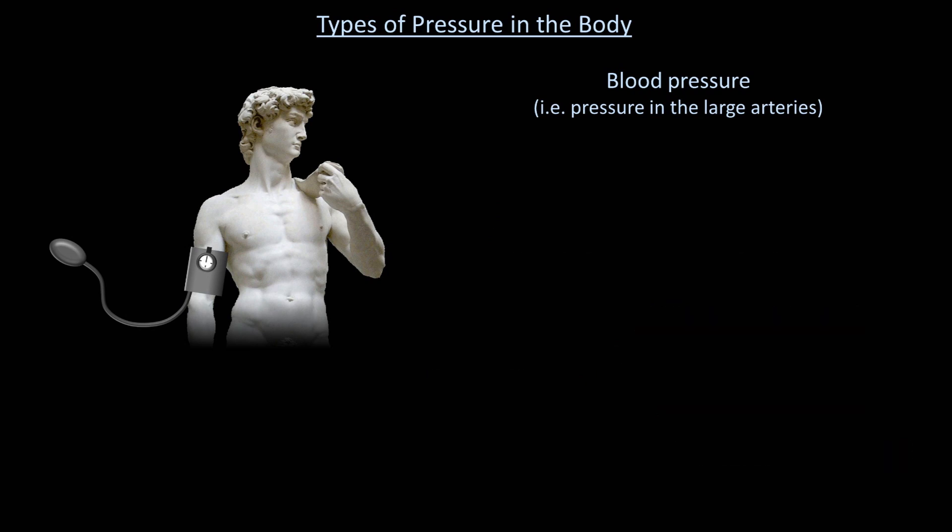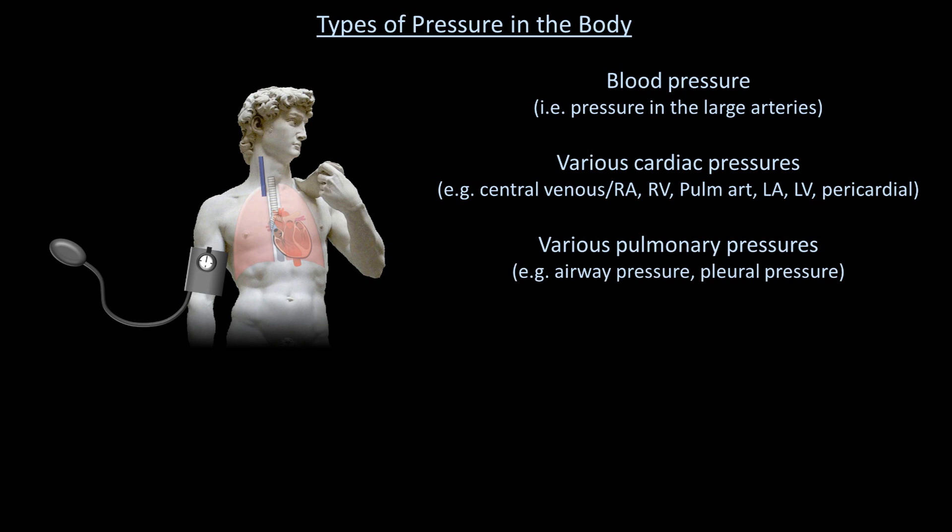You may be wondering, in addition to the blood pressure, how many other kinds of pressure are routinely measured in the body? There are at least a dozen. They include various intracardiac pressures, various pulmonary pressures, intra-abdominal pressure, bladder pressure, which is typically used as a surrogate for intra-abdominal pressure, intracranial pressure, and finally intraocular pressure.